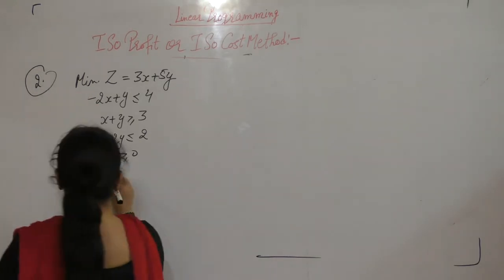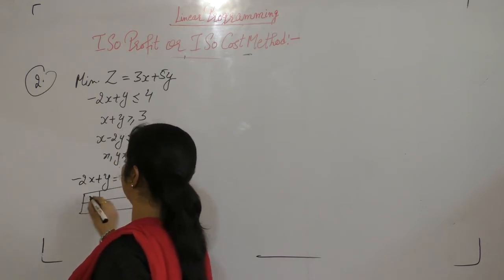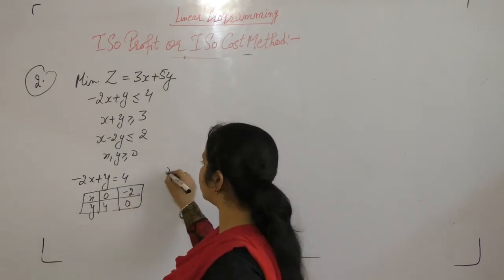Solve these inequalities by making it in equation form. When x is 0, y is 4. When y is 0, x is minus 2.